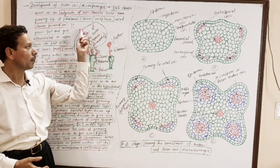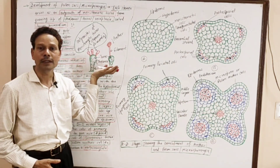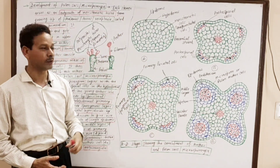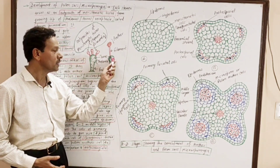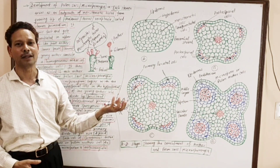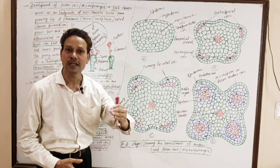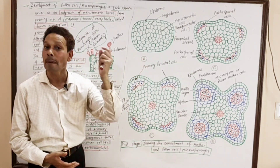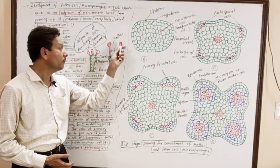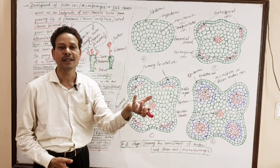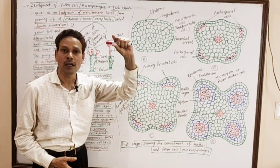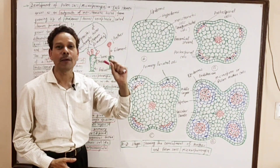First of all, I will discuss development of stamen. This development occurs in the form of small outgrowths, and these outgrowths are of meristematic tissue. These outgrowths which occur on this floral axis — it is torus, it is thalamus, or it is receptacle. Development of stamen occurs in the form of small outgrowths of meristematic tissue. These outgrowths grow fast and soon differentiation occurs. This upper region, which is a bilobed structure — this knob-like structure is the anther, and this lower small stalk-like structure is the filament. This is the development of stamen.